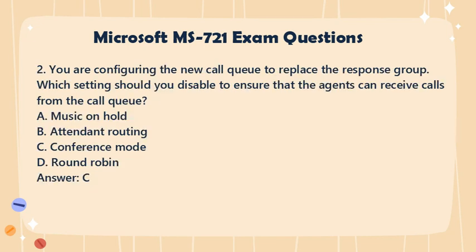Question 2. You are configuring a new call queue to replace the response group. Which setting should you disable to ensure that the agents can receive calls from the call queue? a. Music on Hold. b. Attendant Routing. c. Conference Mode. d. Round Robin. Answer: c.